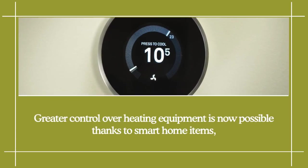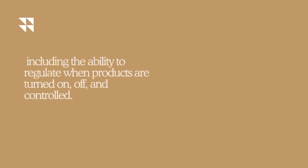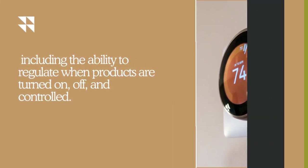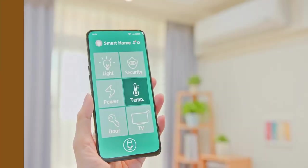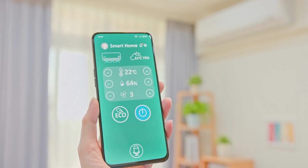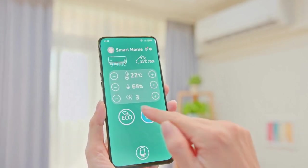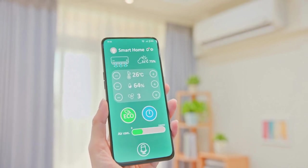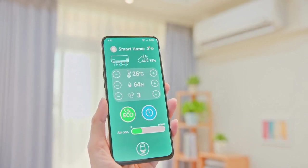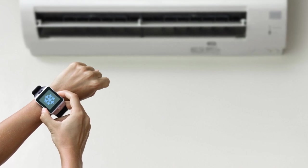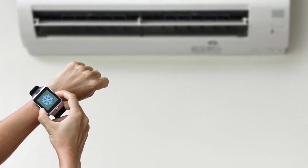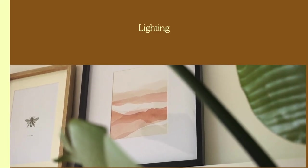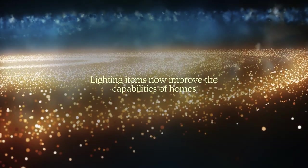How to build an intelligent home — heating: greater control over heating equipment is now possible thanks to smart home items, including the ability to regulate when products are turned on or off and control if particular conditions are fulfilled. Smart goods may be equipped with temperature or humidity sensors to automatically turn on or off. Air conditioners are included in this category of smart home advancements.